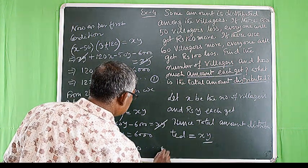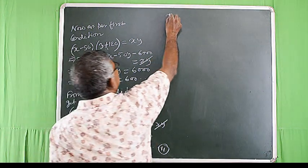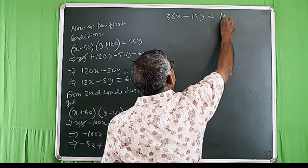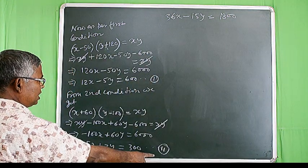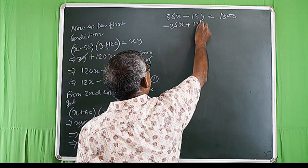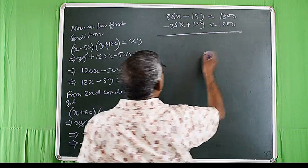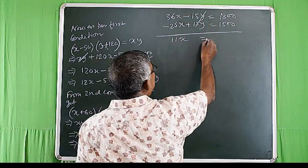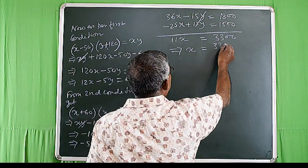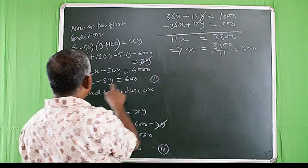Students, let us multiply equation number 1 by 3 to get 36x - 15y = 1800. And multiply equation number 2 by 5 to get -25x + 15y = 1500. Now adding we get 11x = 3300, which implies x = 3300 / 11 = 300.